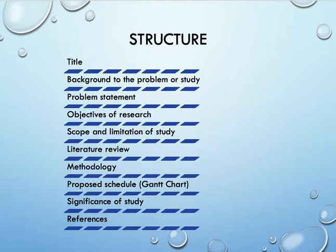For the proposal structure, of course you need to have the title and then the background to the problem of study. Then you write the problem statement, which is derived from the background study. Then you state the objective of the research. The objective must be based on the gaps in the problem statement. Then the scope and limitation of the study — what you cover and what you did not cover in your study — you need to highlight here.